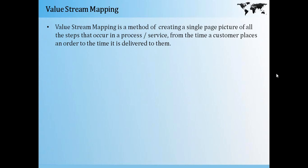For example, if a person is ordering something online, if we create the process in a single picture, the steps should be followed from listing online, then ordering the product online, then that order going to a third-party website which checks its inventory for stock available. If it's not available, he will place an order with the vendor. The vendor would ship the product, it would be in transit for a few days, and then it would be delivered to the customer.